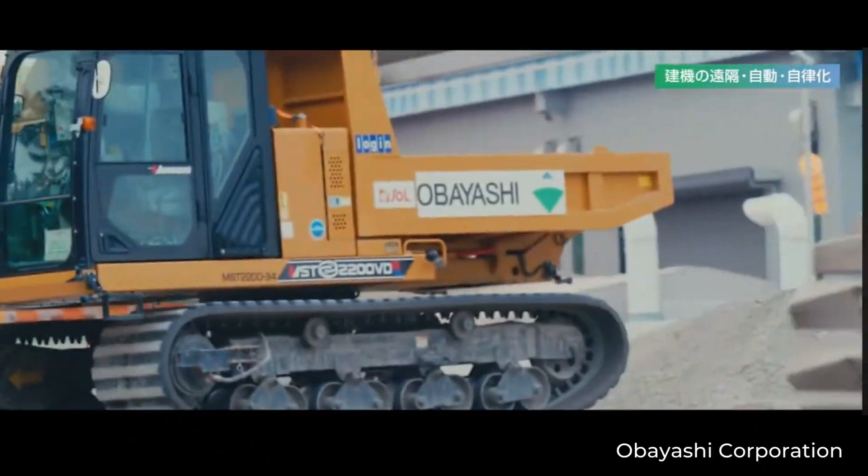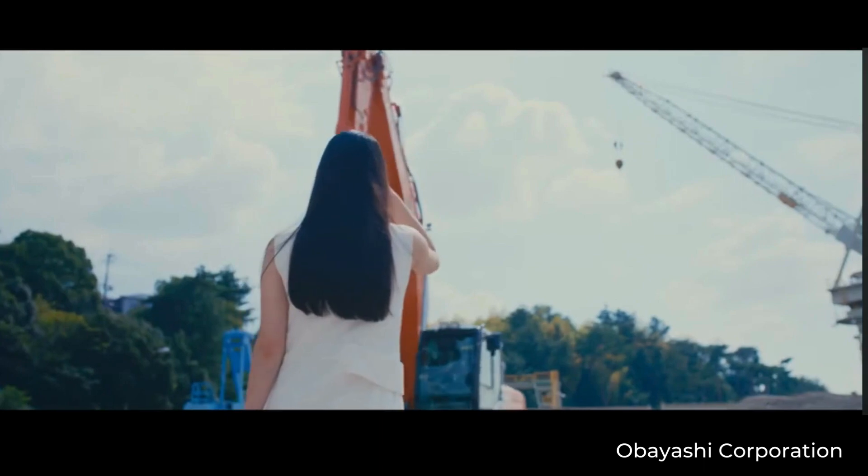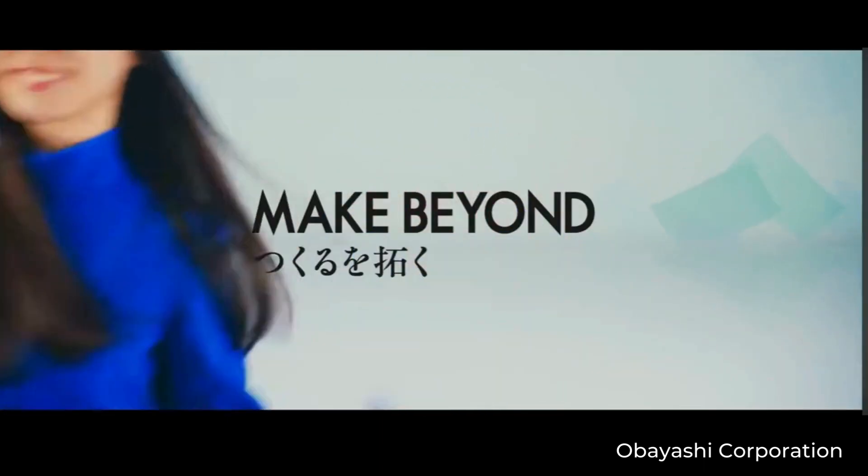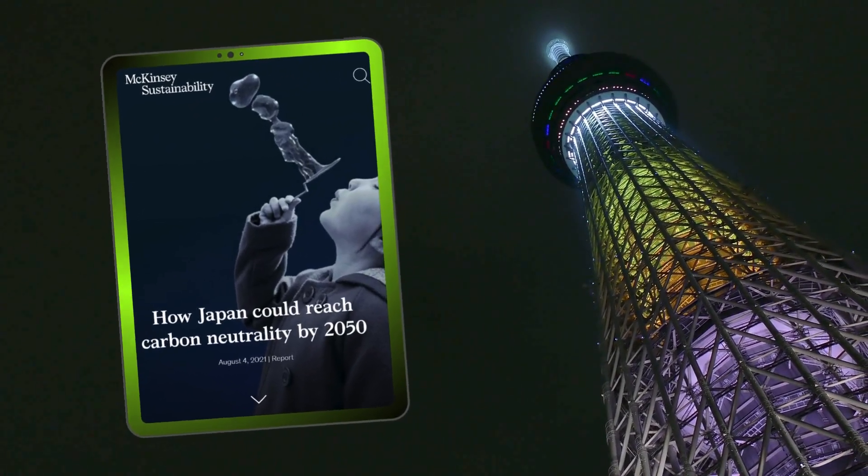Obayashi Corporation, which built Japan's tallest tower, plans to start building a space elevator in 2025, with the aim of it being operational by 2050. That's the same year Japan hopes to achieve carbon neutrality. The construction process is expected to be done in several stages.